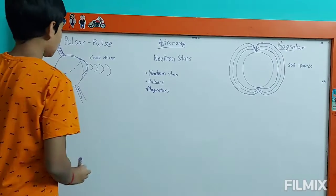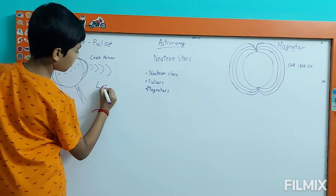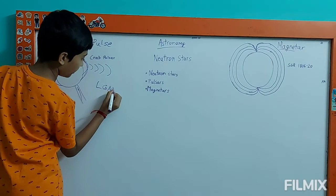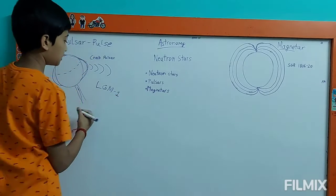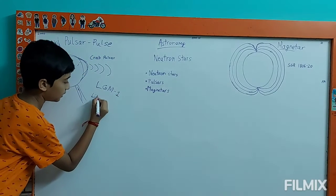When the first pulsar was discovered, it was nicknamed as LGM-1. What does LGM stand for? It is little green men.